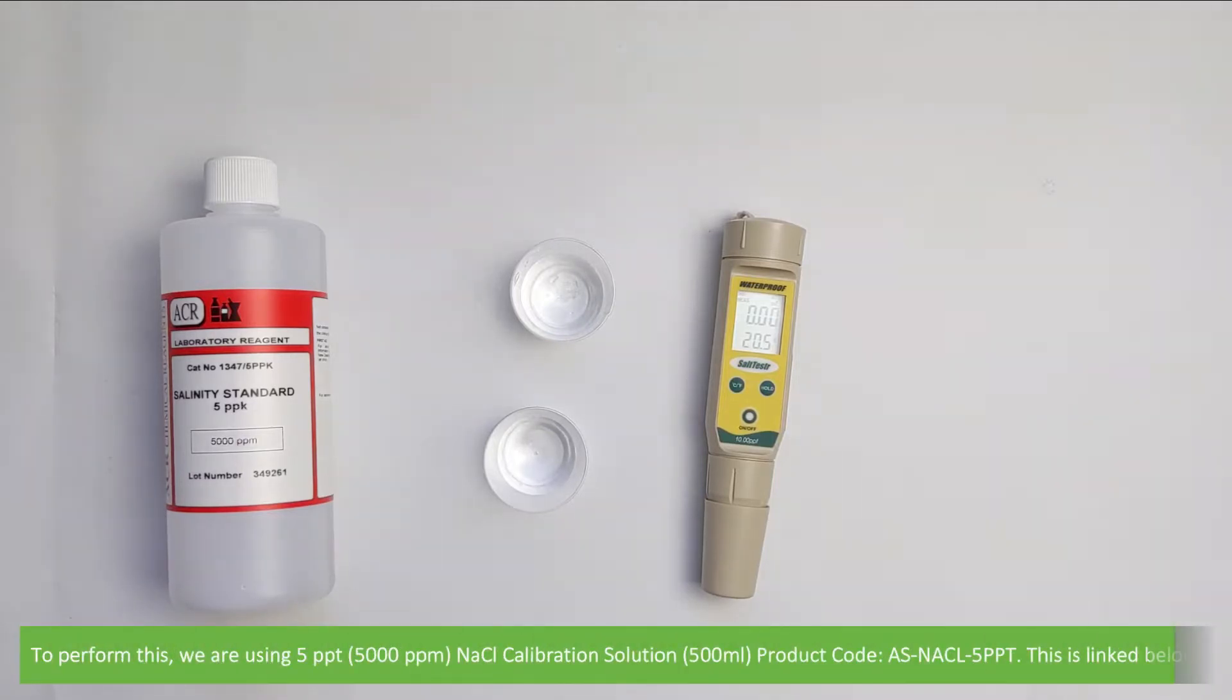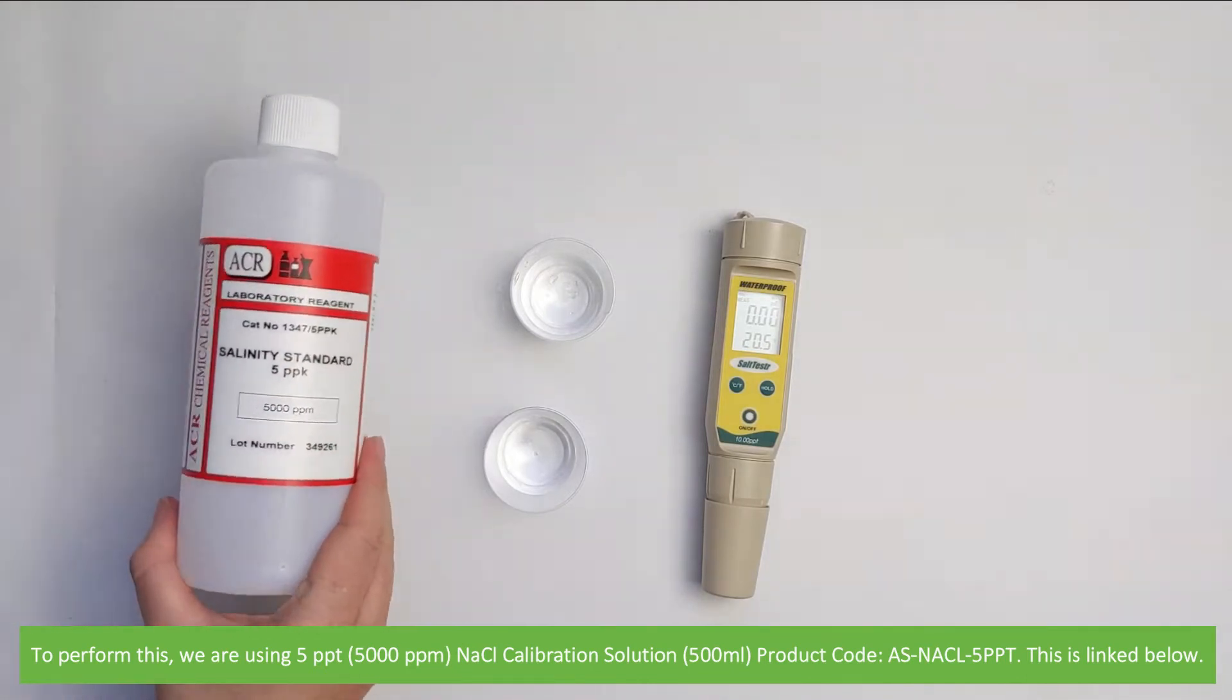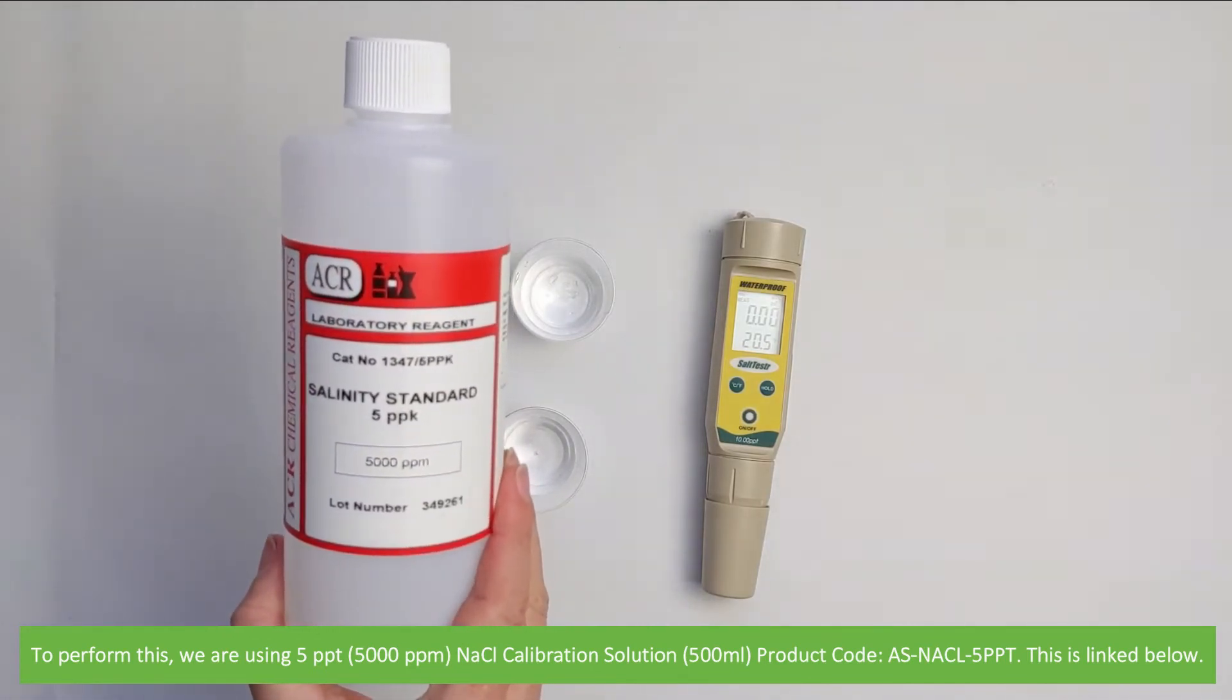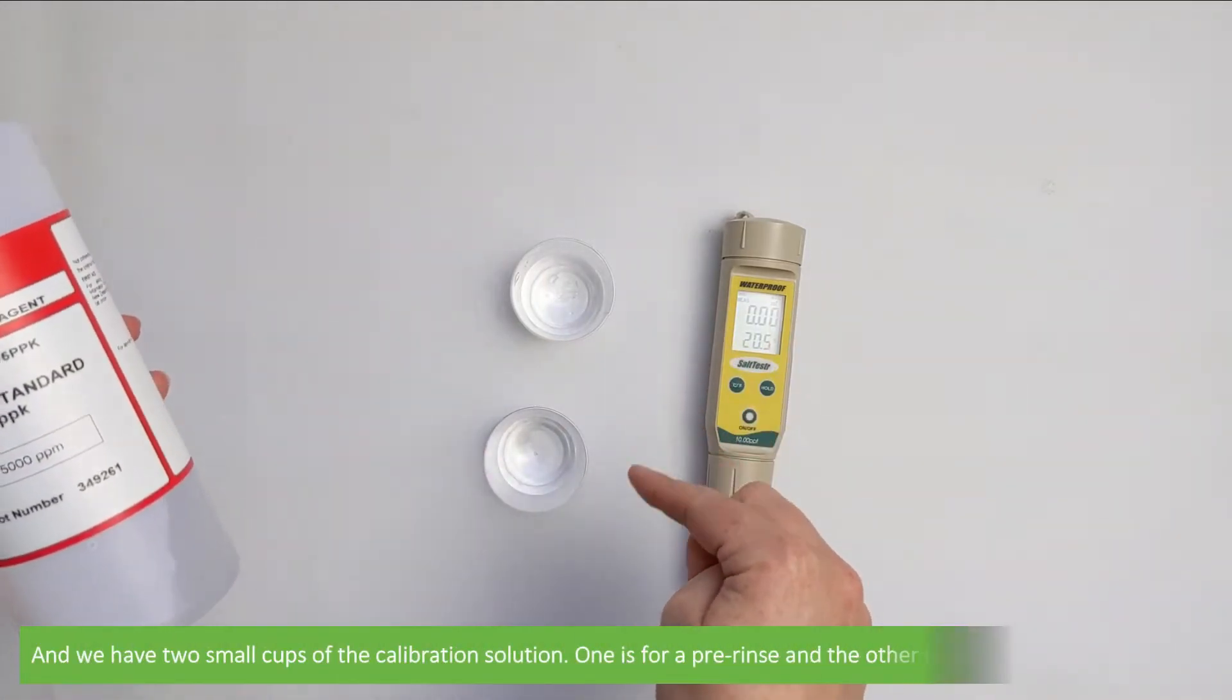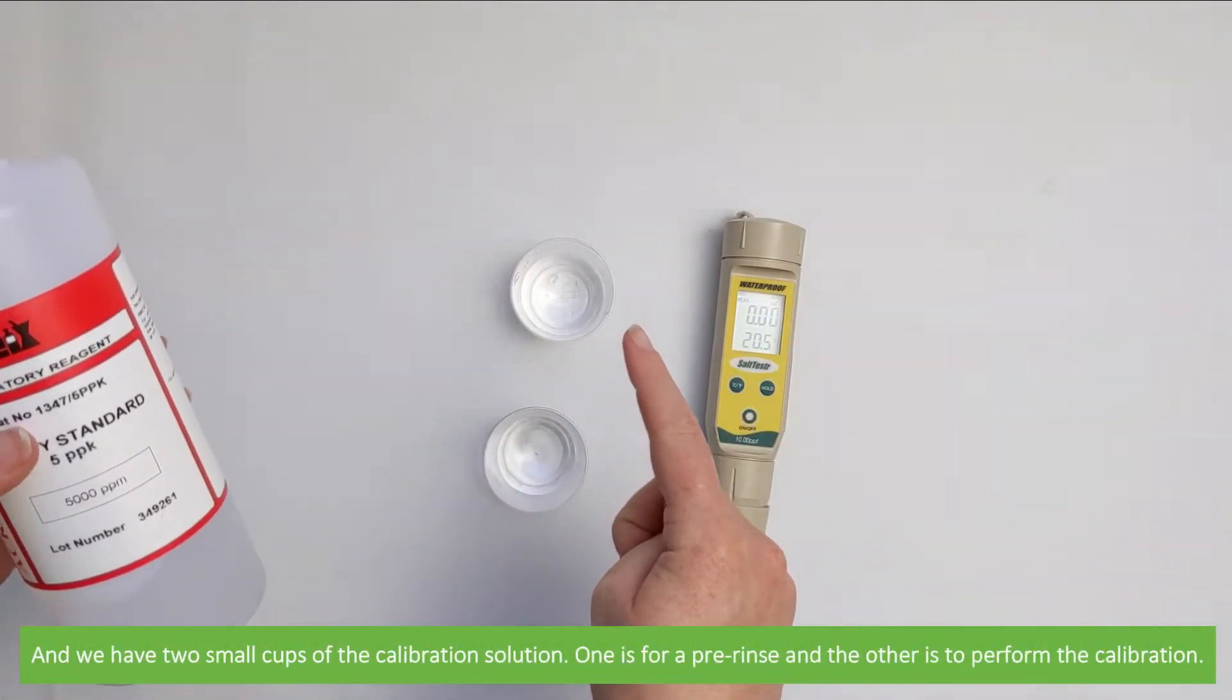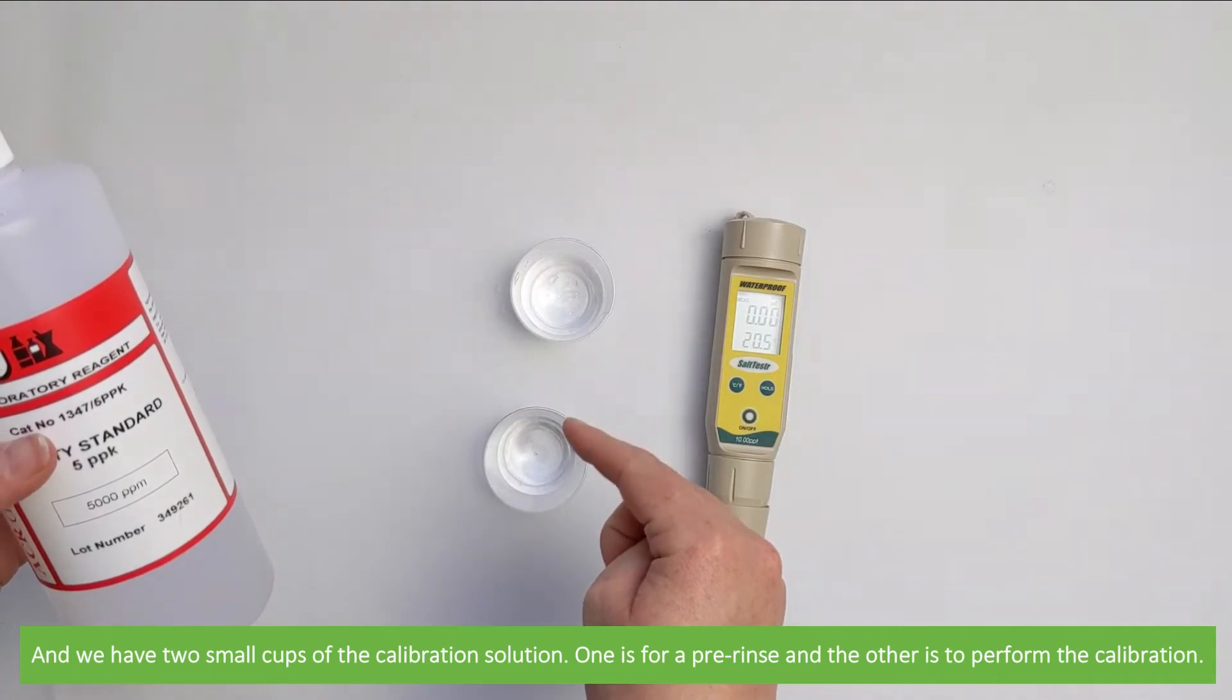To perform this we're using 5 PPT sodium chloride calibration solution in a 500ml bottle. The product code is ASNACL5PPT, this is linked below. We have two small cups filled with the calibration solution: one is for a pre-rinse and the other is to perform the calibration.